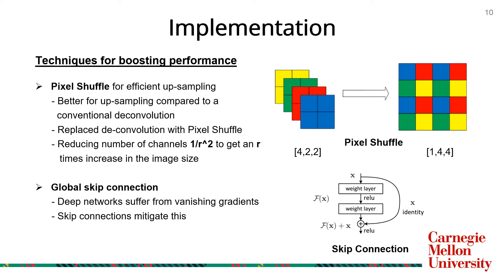Additionally, deep neural networks tend to encounter the problem of vanishing gradients. To tackle this, we introduced a global skip connection within the architecture. This ensured that the error was able to backpropagate through to the initial convolutional layers without diminishing significantly.